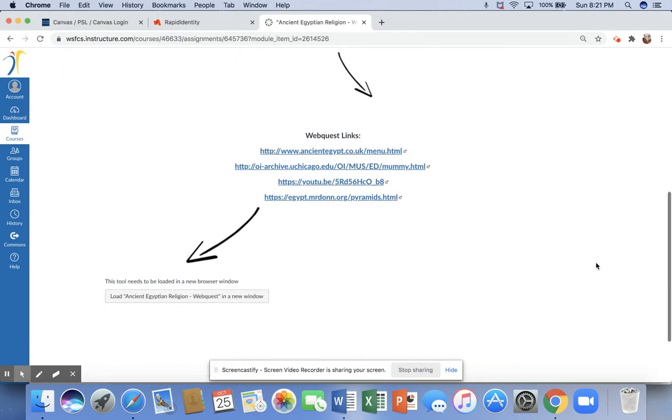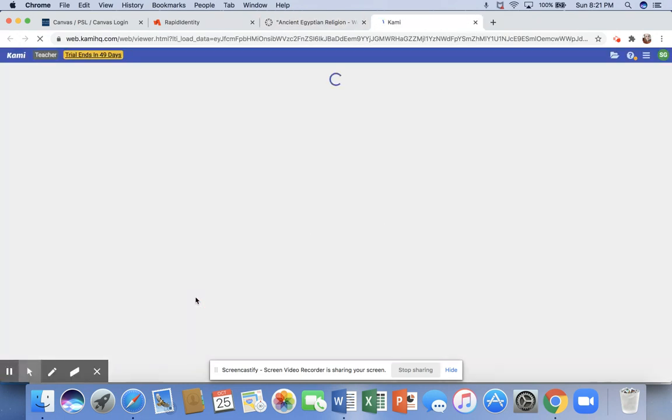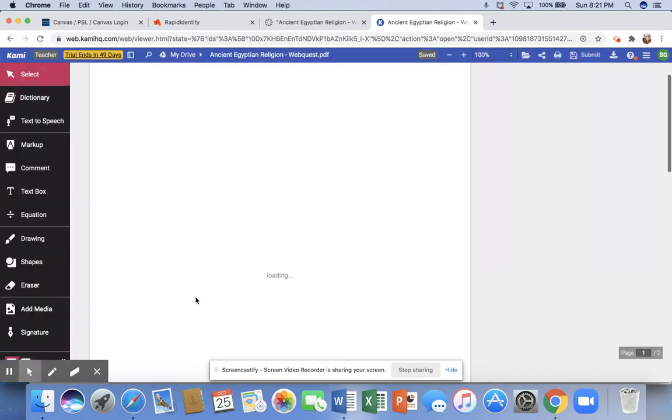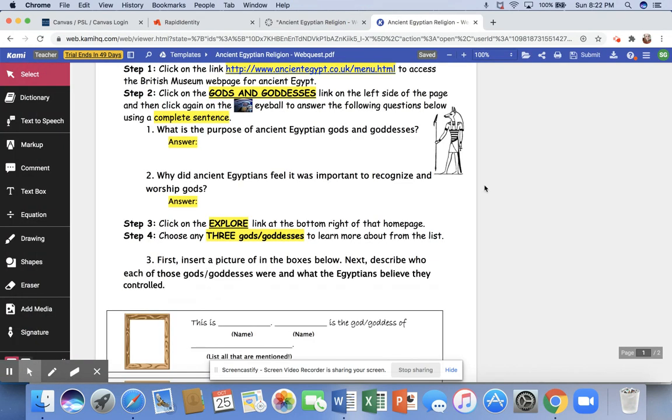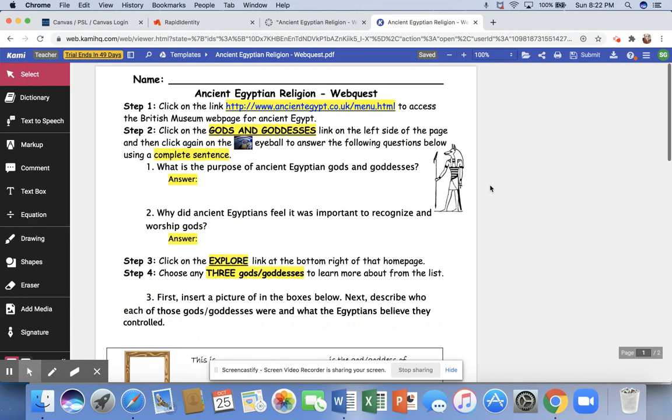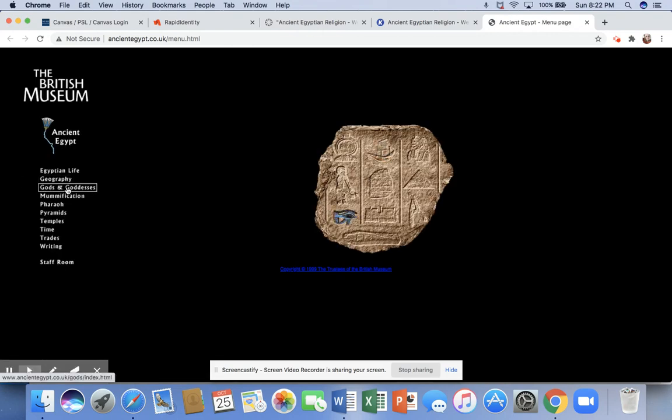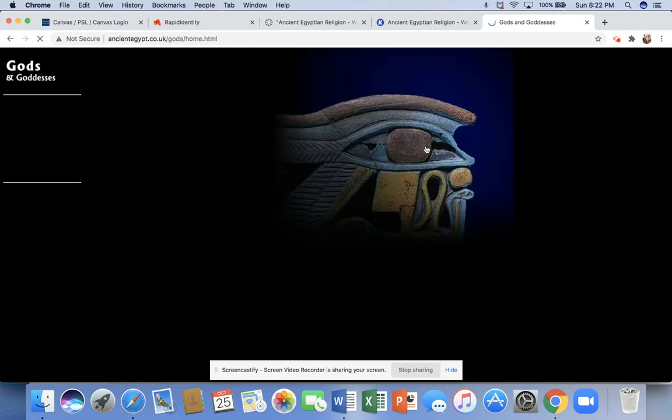So I'm going to show you what that's going to look like. When you open and load it in KAMI, you'll notice that there are directions at the very top, right below the name blank. Again, the first thing that you're going to do is click on the link, and it's going to open that website in a new tab. So once you open that, you'll notice the directions tell you to go to gods and goddesses.